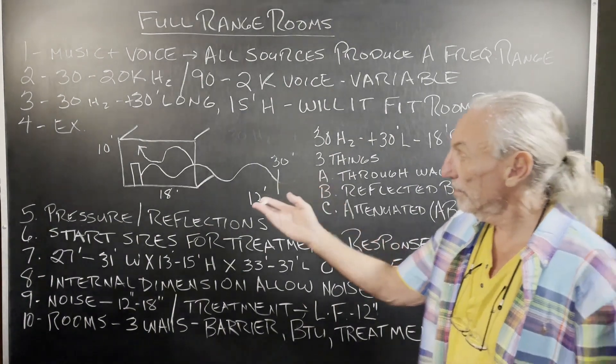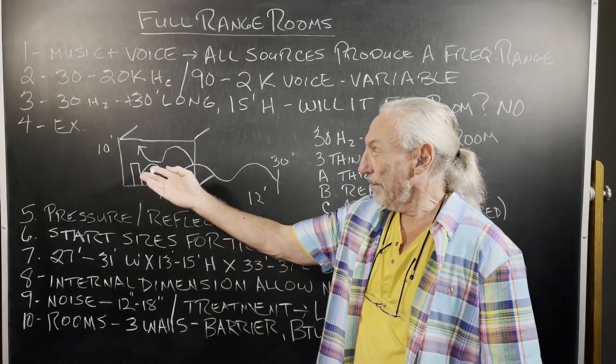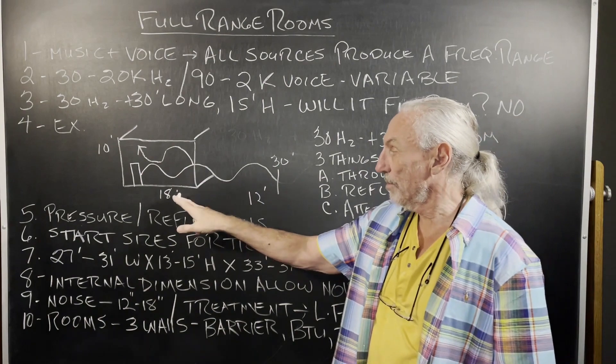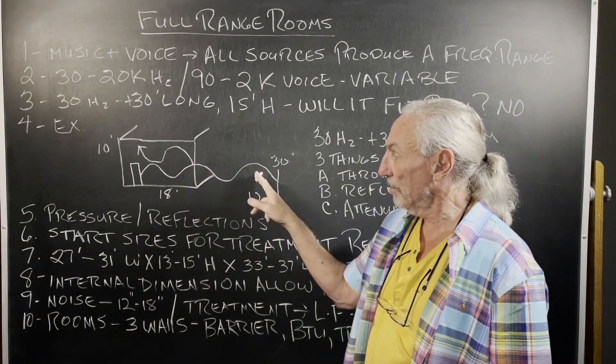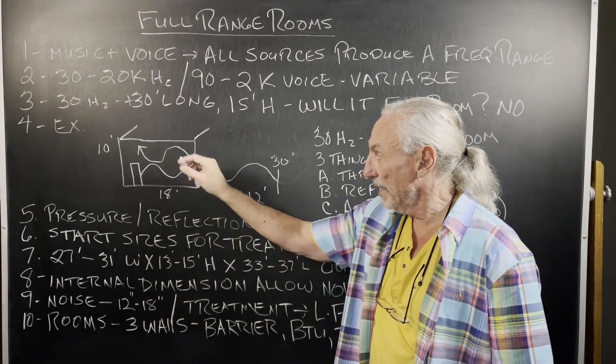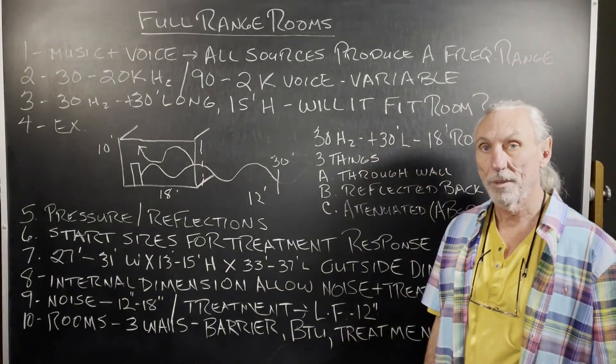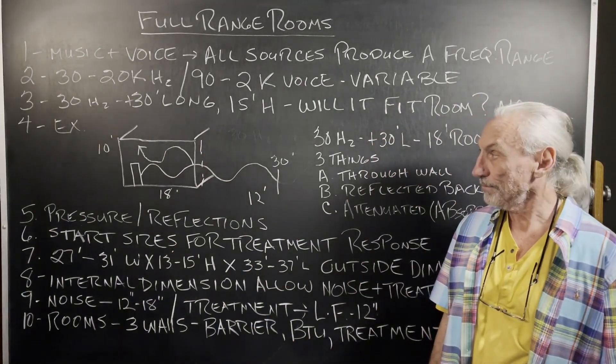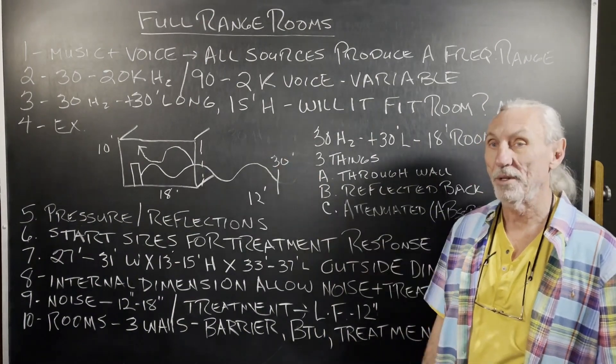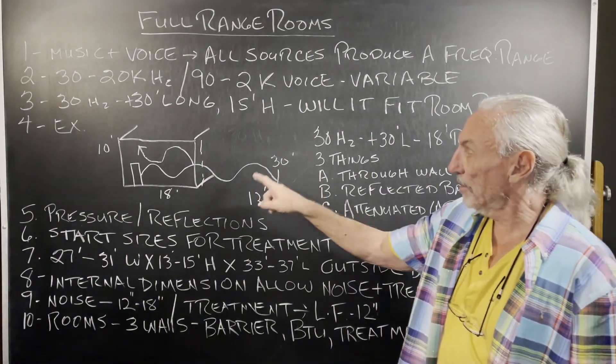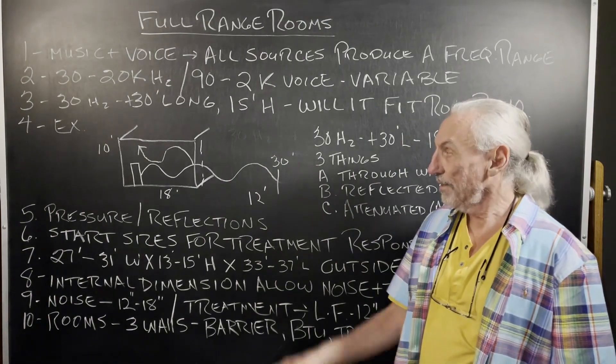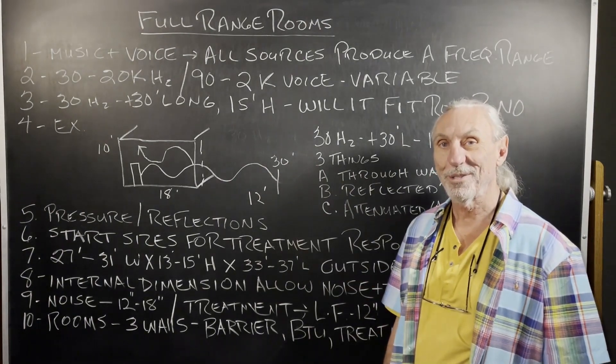Well, let's look at the room. When that big 30 foot wave is generated into our 18 foot room, part goes through, parts reflected back, and then parts attenuated by the structure. Absorbed. Hopefully. So, there's three things going on there. If you don't think it goes through, just ask your neighbor.